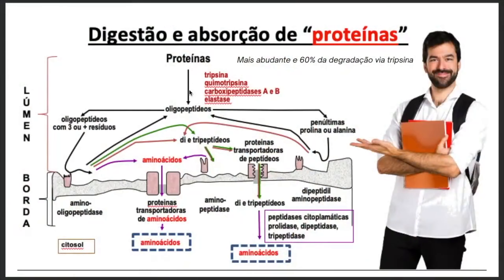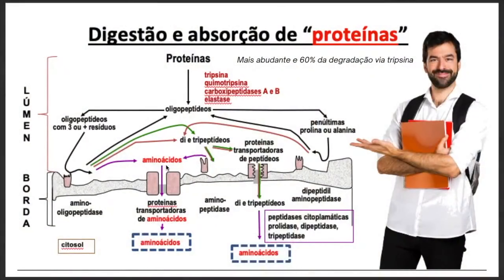So the protein has the possibility of being degraded. When we analyze what happens to this protein when it undergoes enzymatic action — such as trypsin, chymotrypsin, etc. — by means of oligopeptidases and more enzymes, it transforms into amino acids or divides these oligopeptides into tripeptides. Those oligopeptides not absorbed in this first step are divided into penultimate forms such as proline and leucine. These amino acids, already produced by the first digestion process, are absorbed through transport proteins into the cell. There is a very large demand for digestive enzymes so that these proteins are degraded and then absorbed as amino acids.